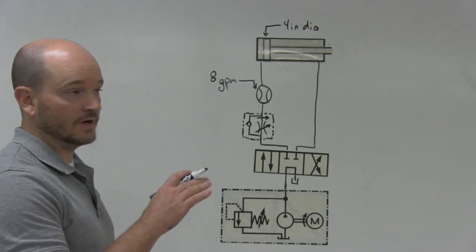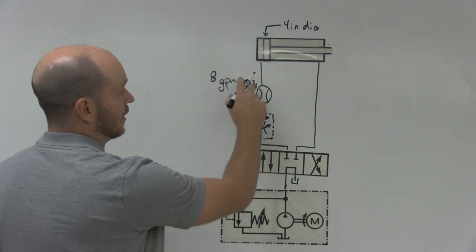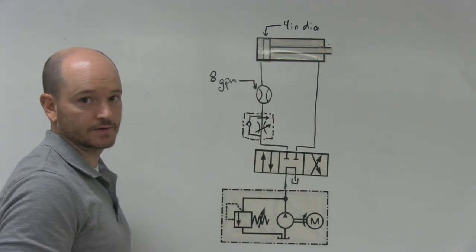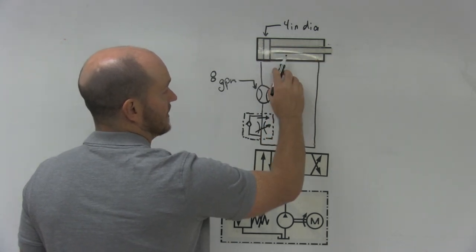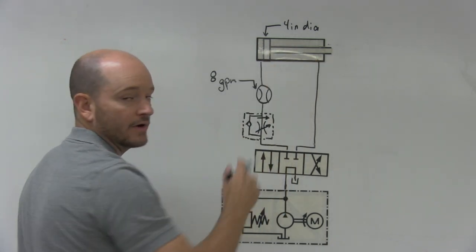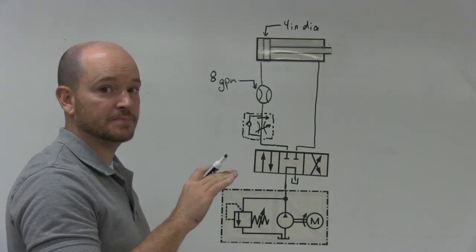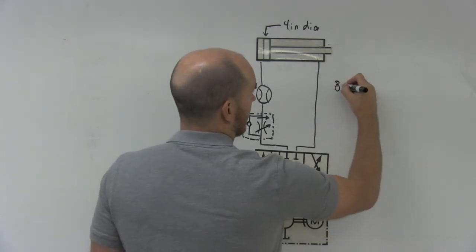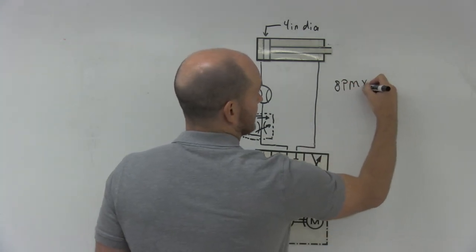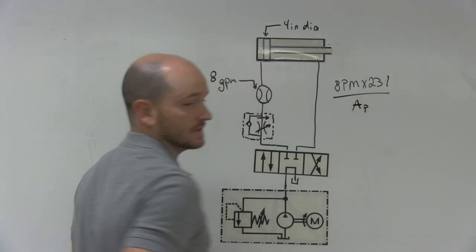So in this video we're going to assume that we have 8 gallons per minute being read here going into the cylinder, and we have a 4 inch diameter piston on the cylinder that we are attempting to control. So the formula to calculate out the speed in inches per minute is gallons per minute times 231 divided by the area of the piston.